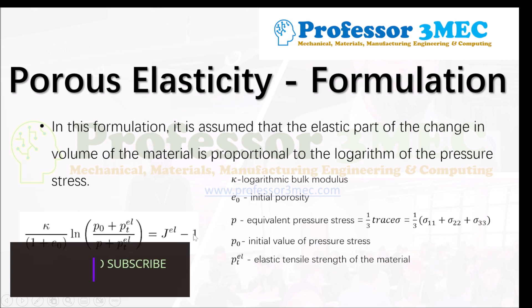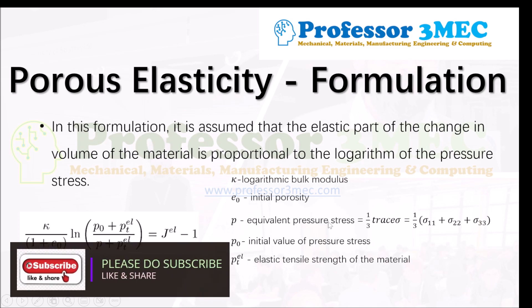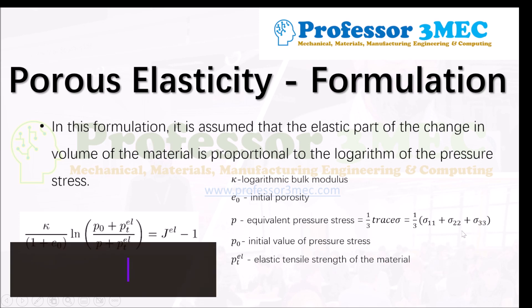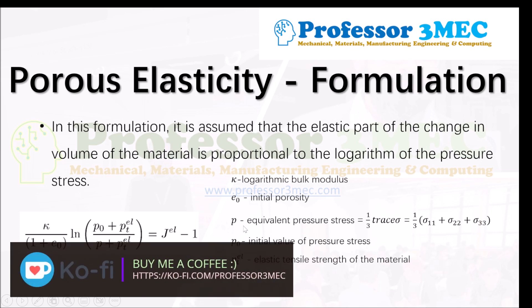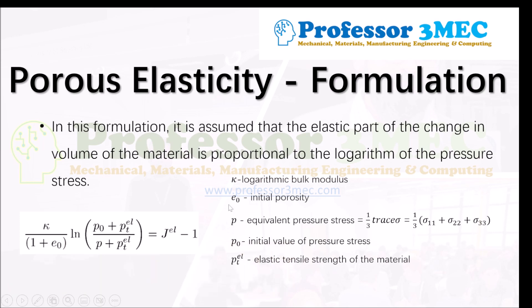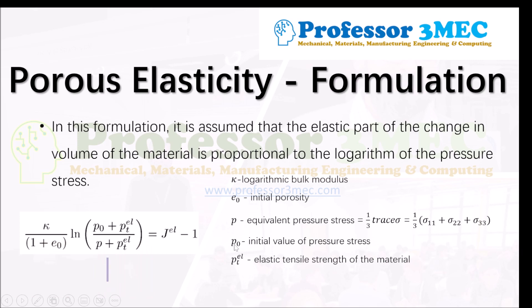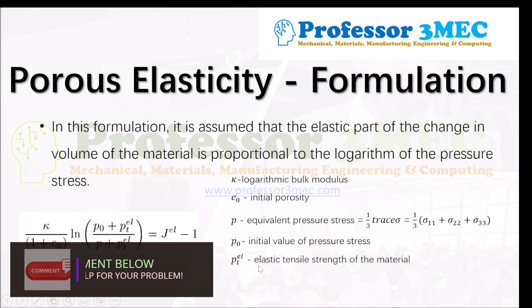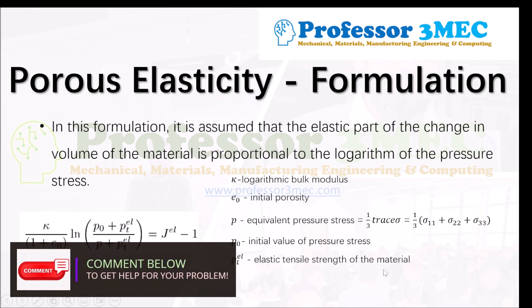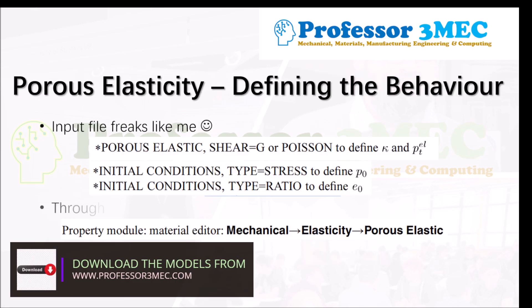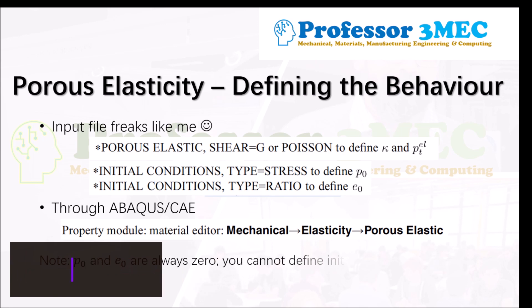The variable p is the equivalent pressure stress, computed based on the trace of the stress tensor in the 11, 22, and 33 directions (the diagonal of the stress tensor) divided by three — a typical definition of pressure stress. p₀ is the initial value of the pressure stress; if you have some pore pressure already present due to fluids or something, you can specify that as p₀ in the material definition. pt_elastic is the tensile strength of the material in the elastic zone, which you can define if known from experiments.